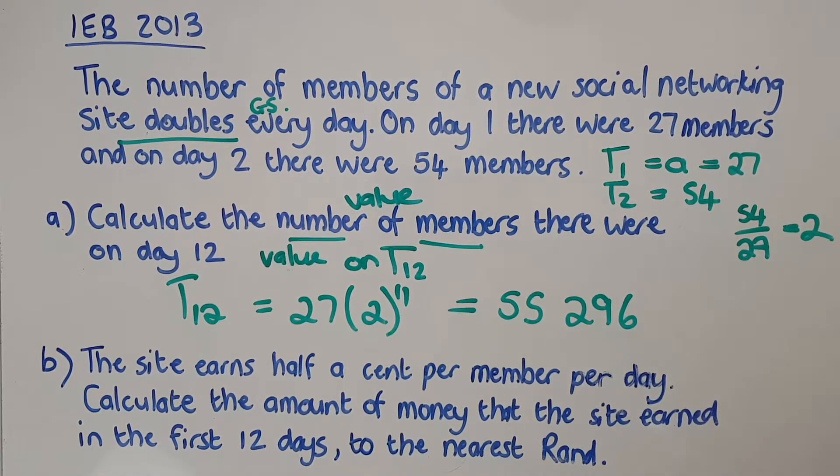The question talks about money. The site earns half a cent per member per day. This is obviously going to add up. Because if one member is on the site on day 1, and the same member is on day 2, then that member will have gathered a half a cent plus a half a cent, so a cent. So this is now going to be summing. Half a cent per member per day. Calculate the amount of money that the site earned in the first 12 days. So we still got 12 to the nearest rand.